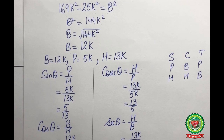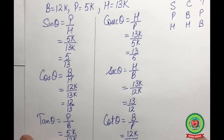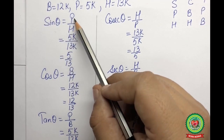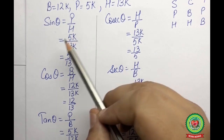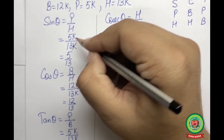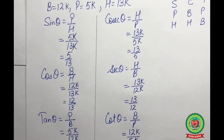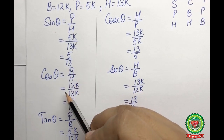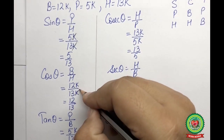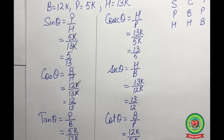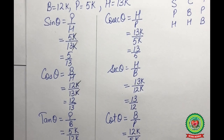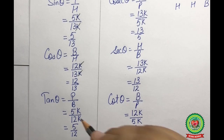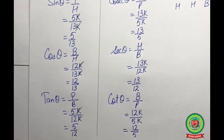Now we find all six T-ratios. Sine theta = p/h = 5k/13k = 5/13. Cos theta = b/h = 12k/13k = 12/13. Tan theta = p/b = 5k/12k = 5/12.